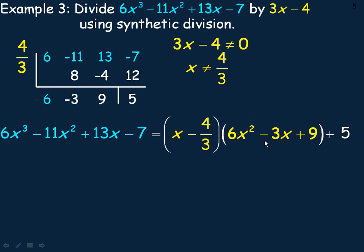Now, we want to know what we get when we divide the original polynomial by 3x minus 4, not by x minus 4/3. Notice that there's a coefficient, a common factor of 3 here. All the coefficients divide by 3.